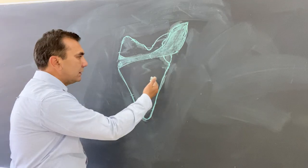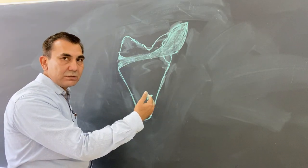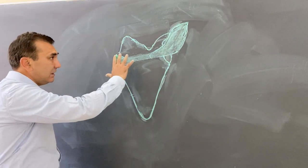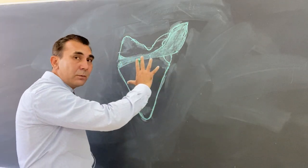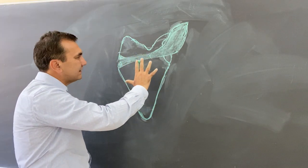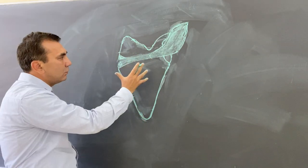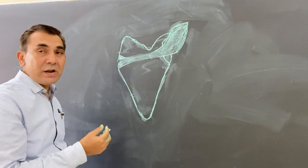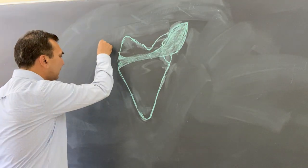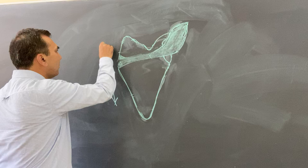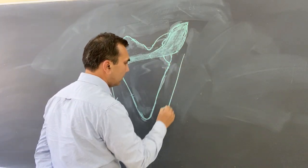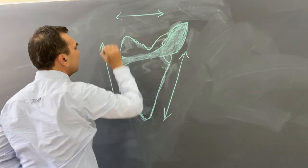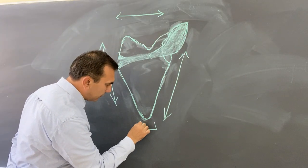Here I have drawn a diagram of the scapula bone. If you see the scapula bone, it is in a triangular shape. Due to the triangular shape, it has three borders.